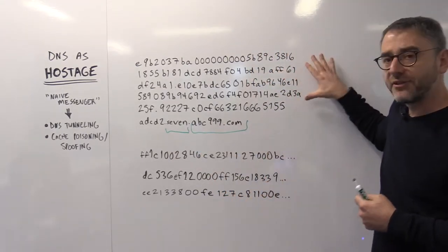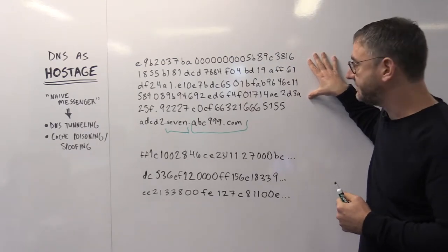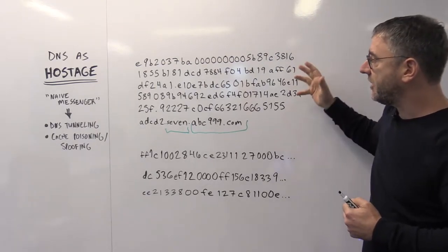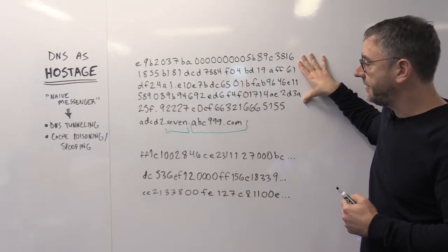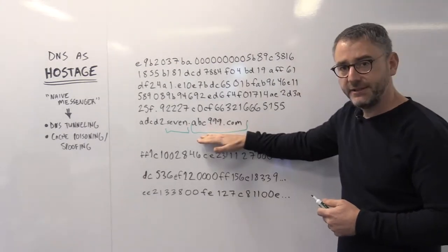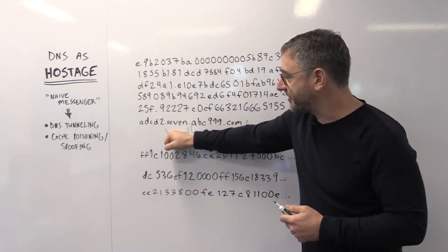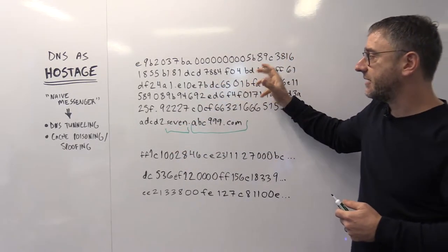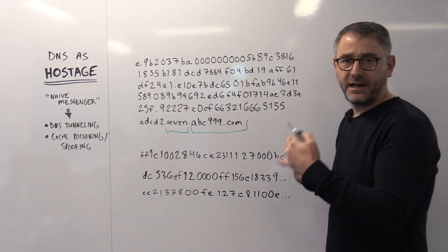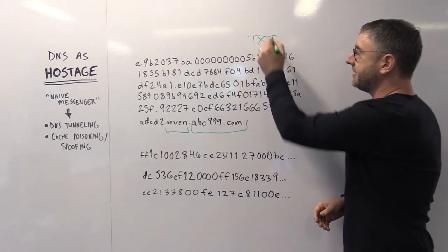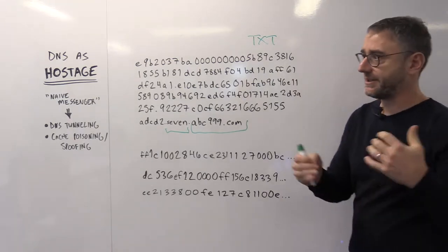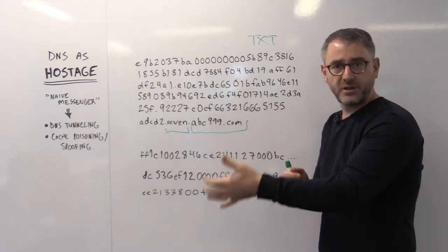When we actually look at the queries, the data that goes back and forth, we often see pretty interesting-looking queries. Of course, there's a domain, maybe subdomains, but usually we'll see a whole bunch of data in that host record itself. Most likely, we're querying for text records, because when we query for text records, we can send a whole bunch of information and arbitrary information back.